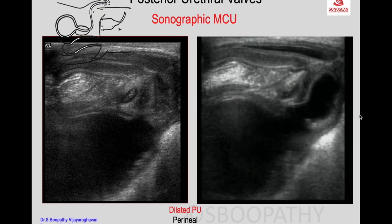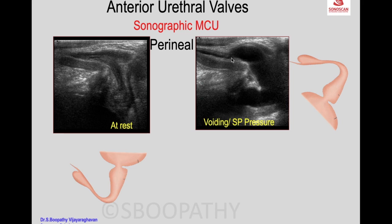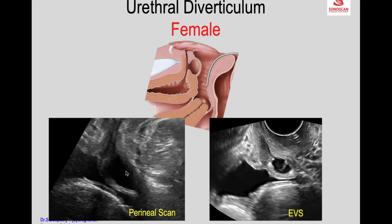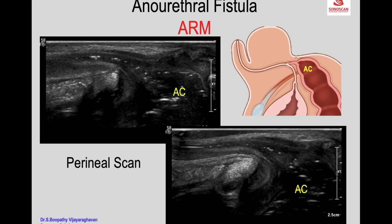This is called the sonographic micturating cystourethrogram — showing the anterior urethral valve or diverticulum. The micturating study confirms the diverticulum. On endovaginal scan, the bladder, urethra, and the diverticulum are visible along with its communication with the urethra, outlined by gas bubbles.